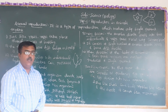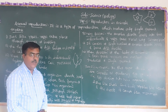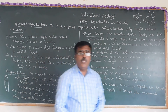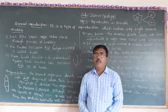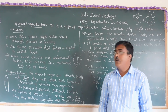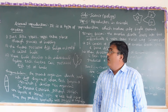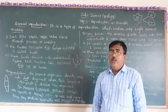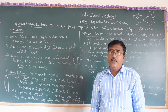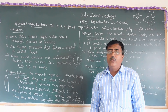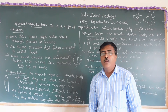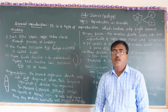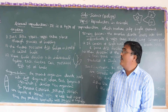Parthenogenesis is the capability of producing offspring without fertilization. However, it cannot commonly be seen in most higher animals. To summarize, asexual reproduction means both male and female gametes are not involved — only a single parent reproduces.